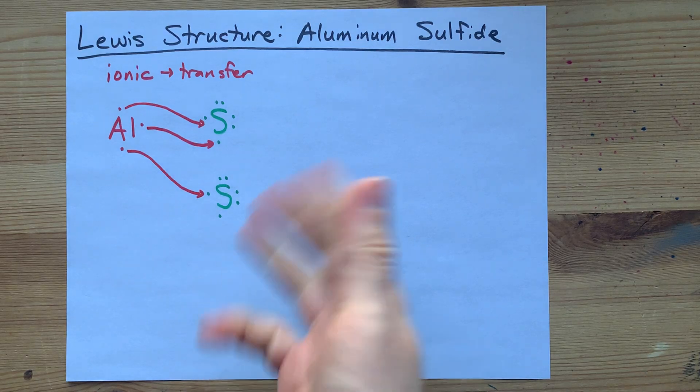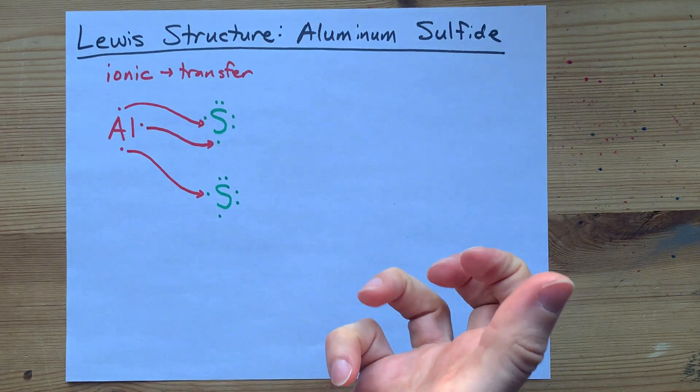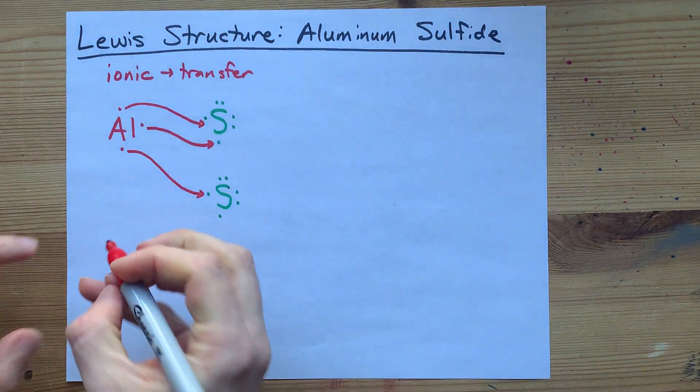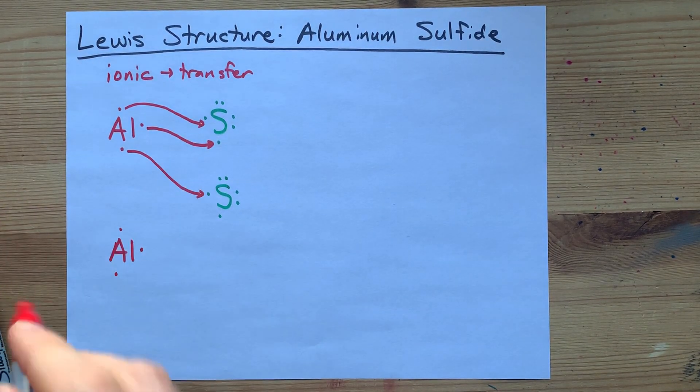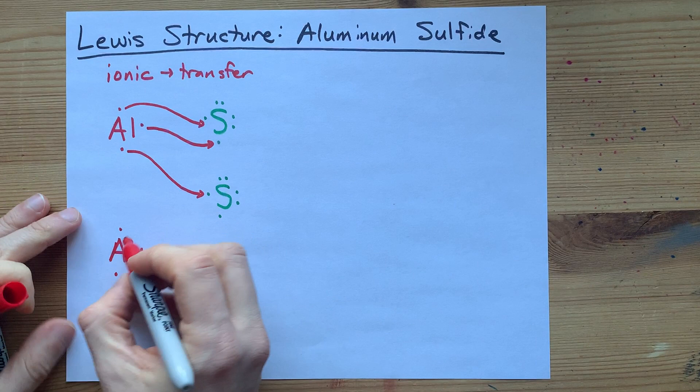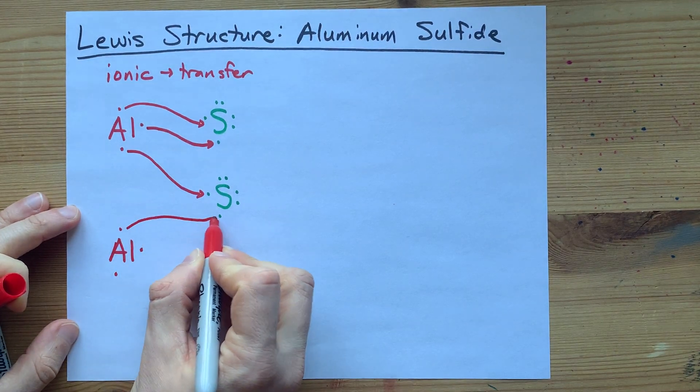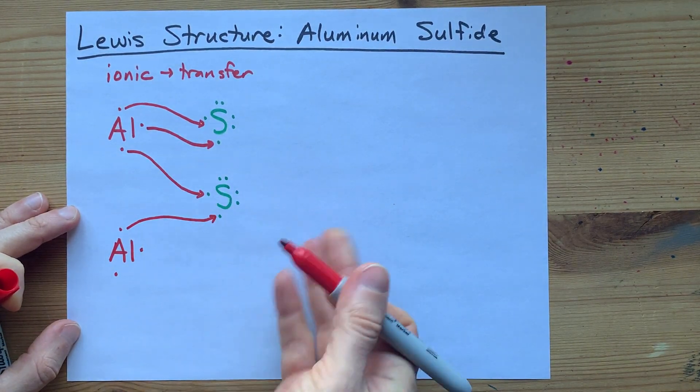Where's it going to get an eighth? Octet rule. The answer is another aluminum. One, two, three electrons for the aluminum. And this aluminum can give its electron away to become sulfur's eighth.